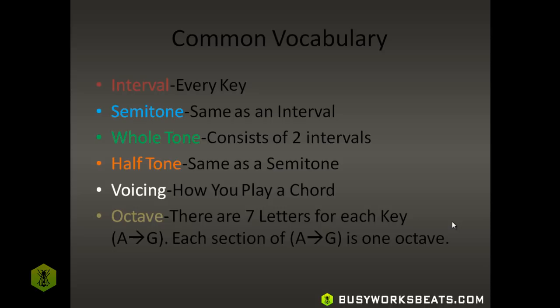Some common vocabulary you're going to hear in this course: an interval just means a note — every key is technically an interval. When we go from one note to another note, we're going up or down one interval. If we go from a white key to a black key, that's one interval. Certain notes are white notes that sit next to each other, like B and C, and E and F. A note to the next note is an interval — it's a counting system. The interval also has a synonymous name: semitone. Semitone means up or down one note — that's all it means.